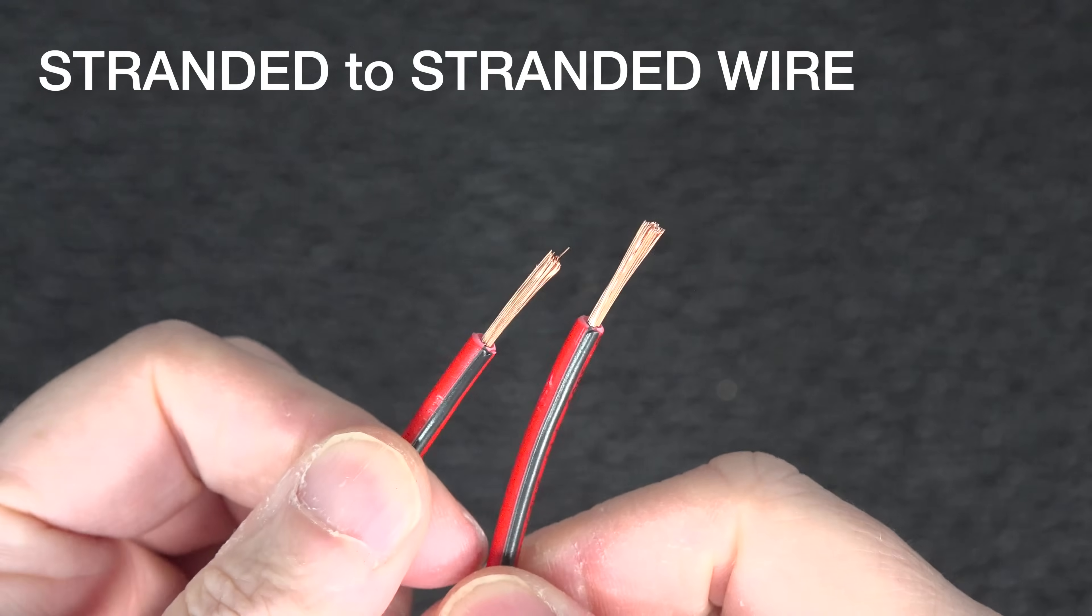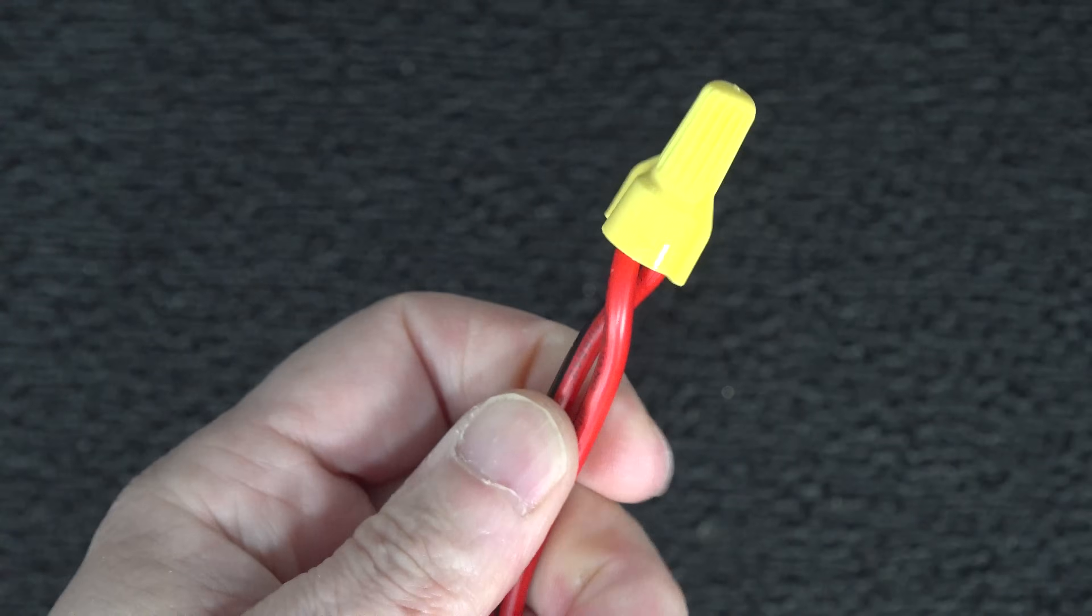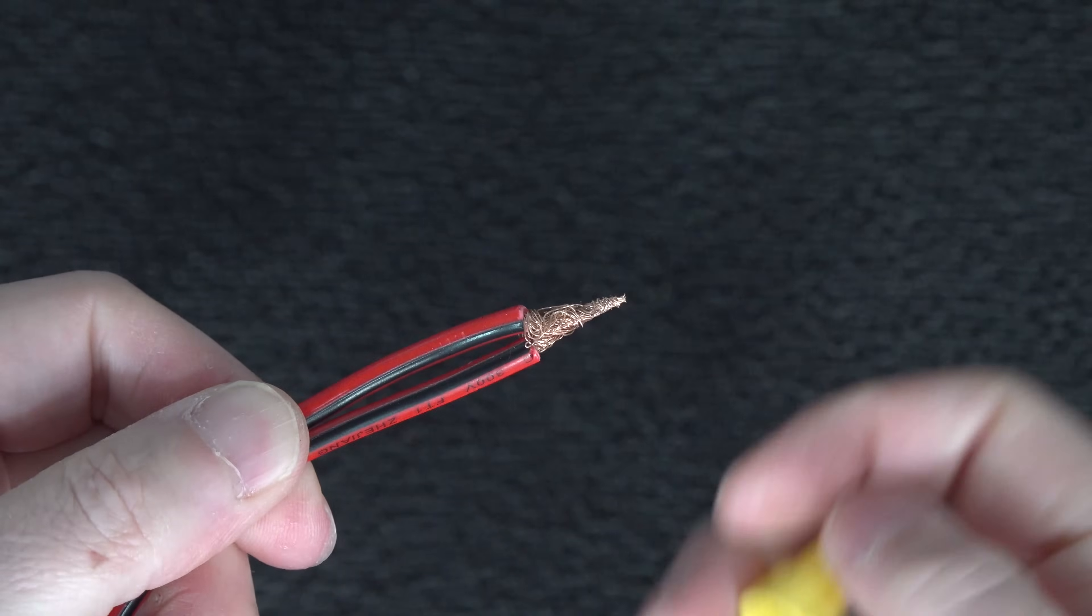If you're faced with two stranded wires, the procedure is basically the same. But if you go ahead and remove that wire nut, you might be surprised to see the kind of bird's nest you get underneath.